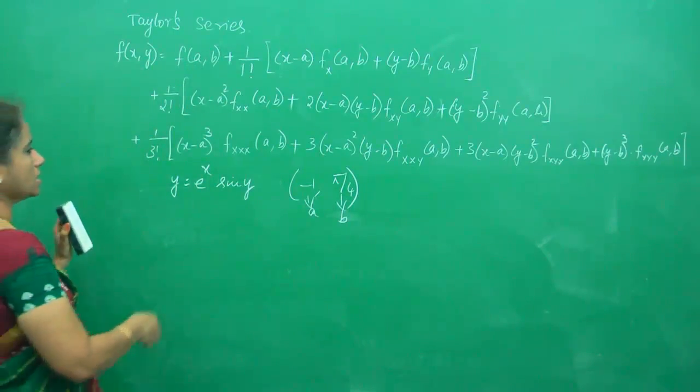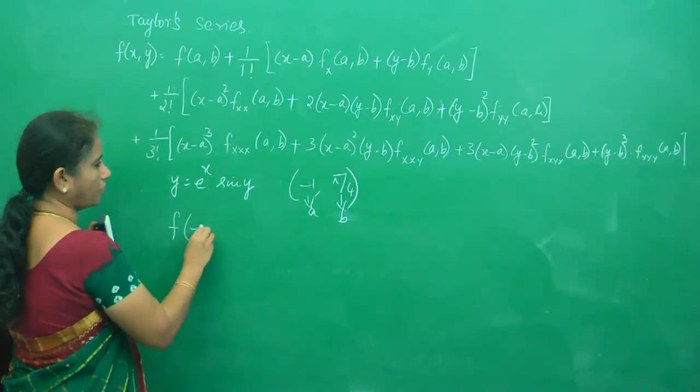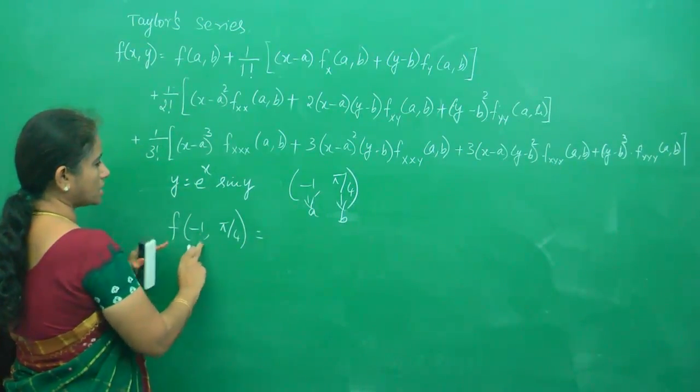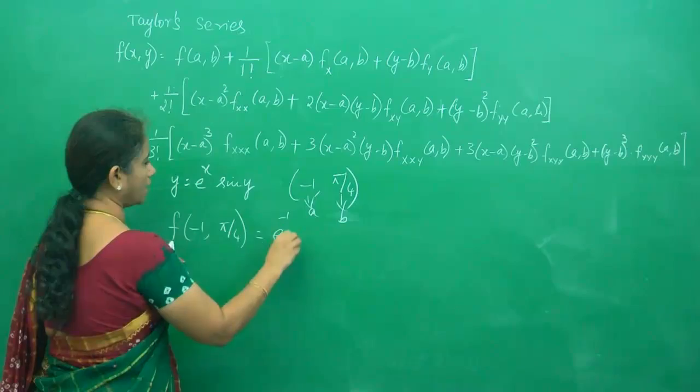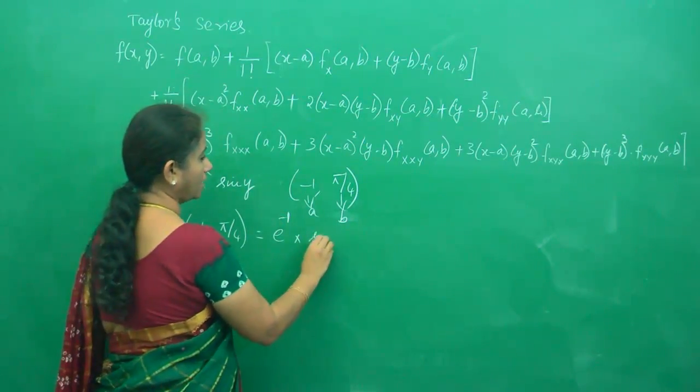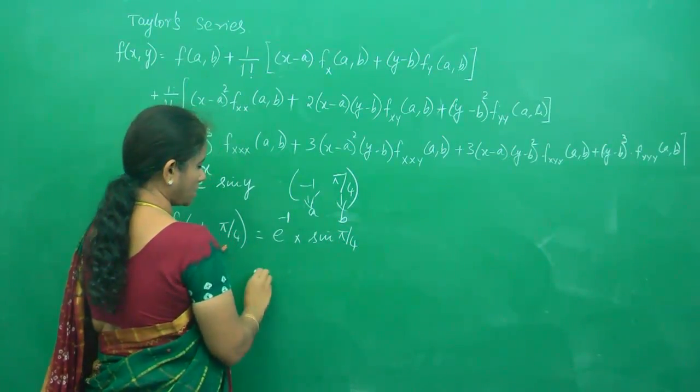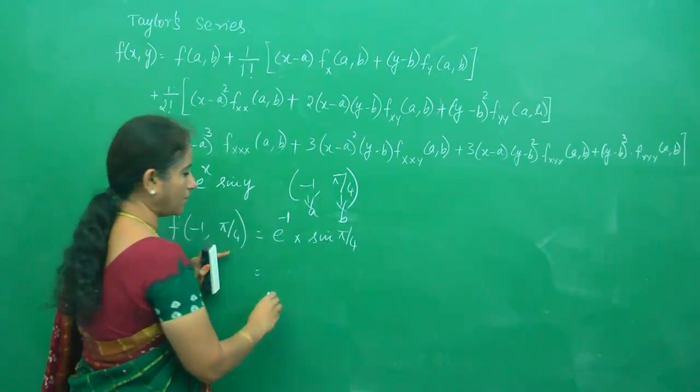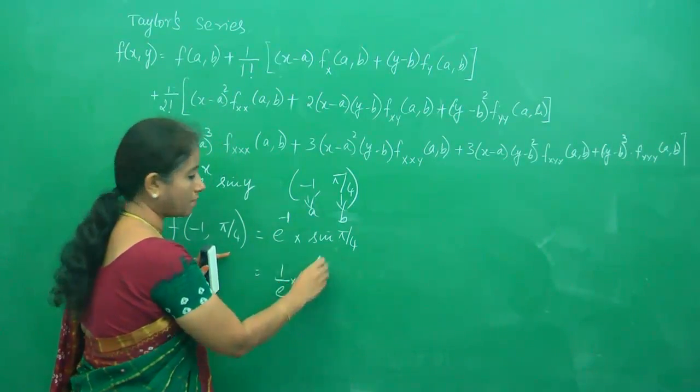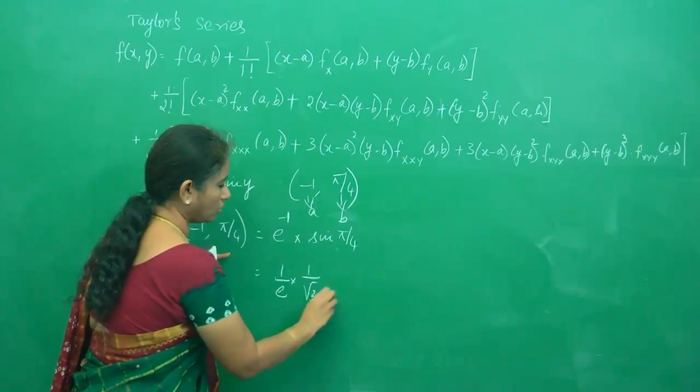f(a,b) - what is f(-1, π/4)? This is e^(-1) times sin(π/4). What is e^(-1)? 1/e. And what is sin(π/4)? Sin(π/4) is 1/√2.